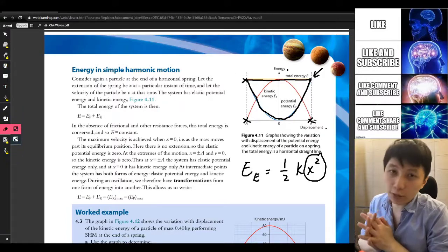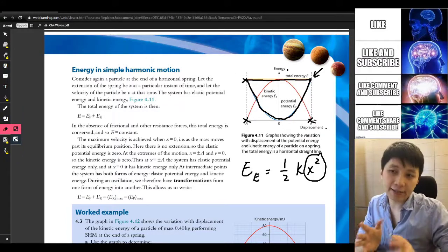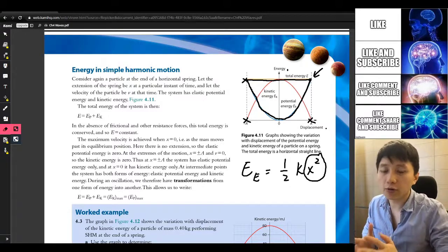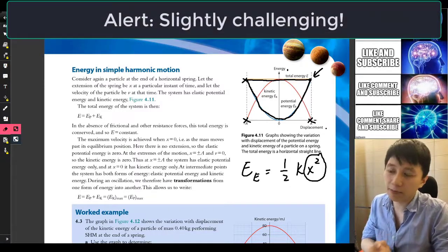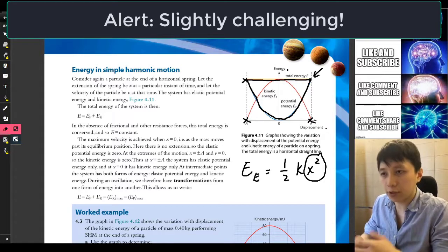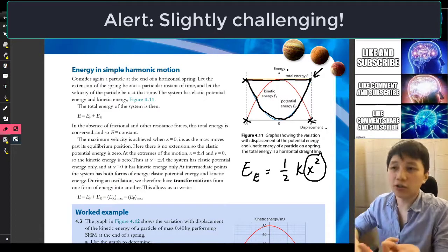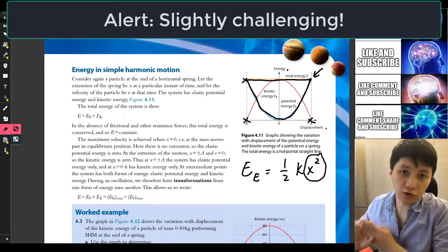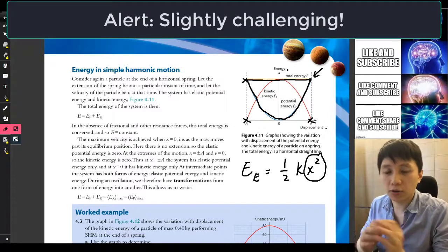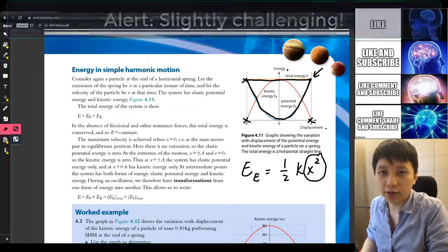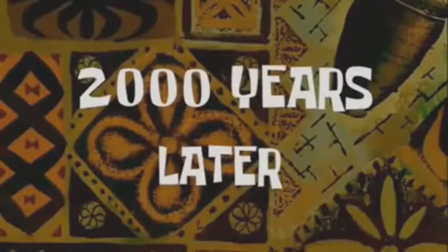So for now, I would like you to obtain the graph of energy against displacement for the vertical spring mass system in simple harmonic motion. You should include, of course, total energy, kinetic energy, elastic potential energy, and gravitational potential energy. Pause the video now and try yourself.